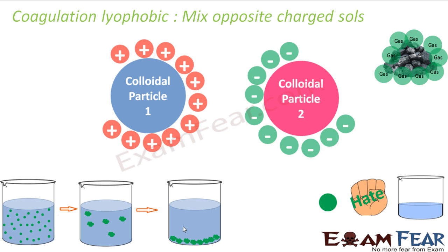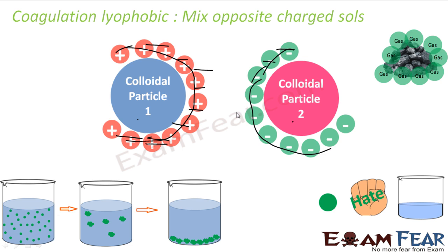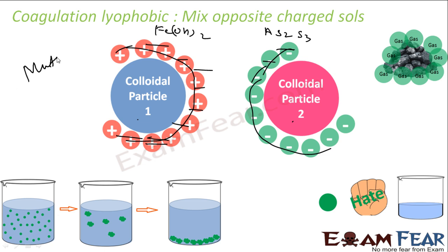The next way is to mix two sols of opposite charge. Colloidal particle 1 has a positive charge, colloidal particle 2 has a negative charge. When you mix these two, positive and negative become neutralized — the charges absorbed on both particles cancel out. Since these two particles are now charge-less, they will easily coagulate. For example, Fe(OH)3 is a positively charged sol, and arsenic sulfide (As2S3) is a negatively charged sol — when you mix these two, coagulation happens. This is called mutual coagulation.